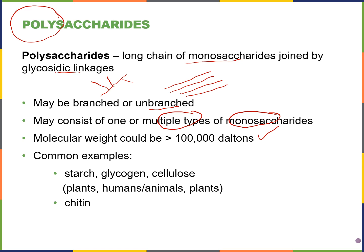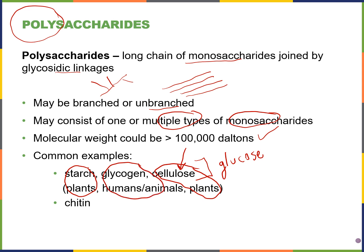Common polysaccharides include starch, glycogen, and cellulose — all made of many glucose molecules linked together, but found in different organisms. Plants store glucose as starch, which we eat and break down for energy. Plants also store glucose as cellulose, which we call fiber. Humans and other vertebrate animals store glucose as glycogen. Chitin is another polysaccharide, made not of glucose but of N-acetyl-beta-D-glucosamine subunits.